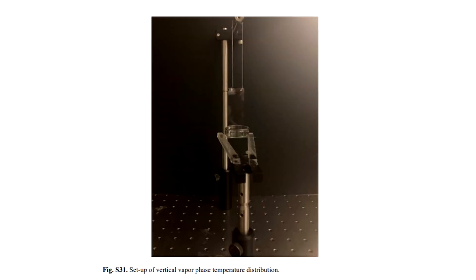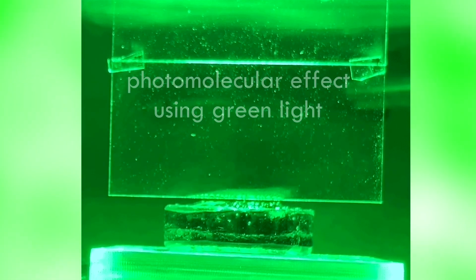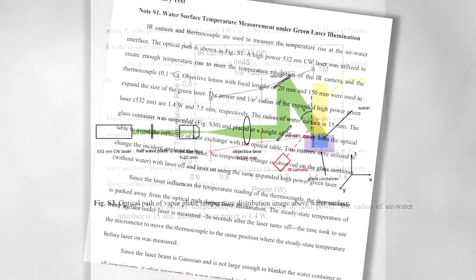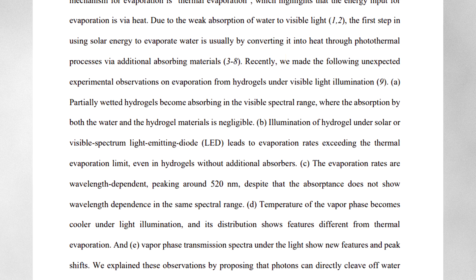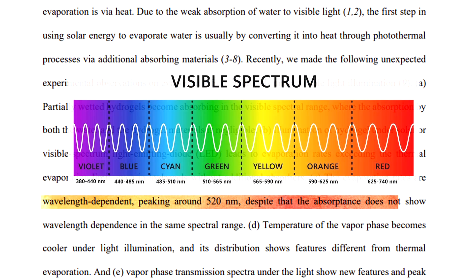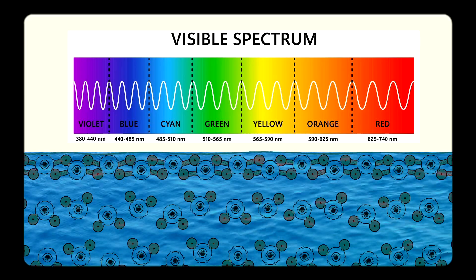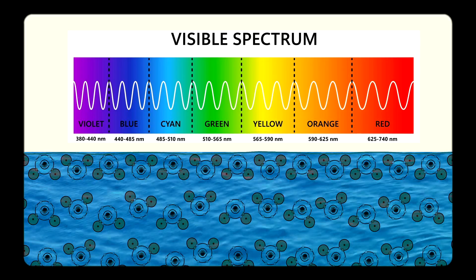The researchers conducted a series of carefully designed experiments to demonstrate and understand the photomolecular effect. One, they measured the evaporation rates of water-laden hydrogels under different wavelengths of light, and found that the effect peaked in the green portion of the visible spectrum, a wavelength range where neither water nor the hydrogel material absorb significantly.